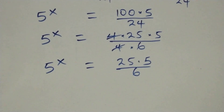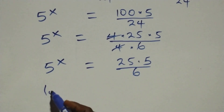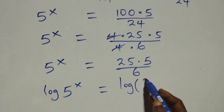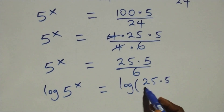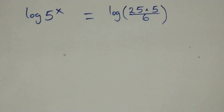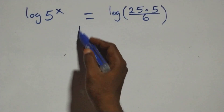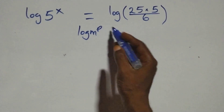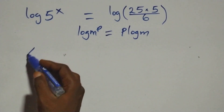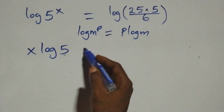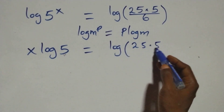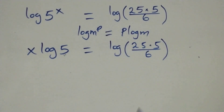Which implies: take the log on both sides. We have log of 5 raised to power x equals log of 25 times 5 over 6. We apply the power rule of logarithms, where log of m to the power p is the same as p times log m. So x times log 5 equals log of 25 times 5 over 6.